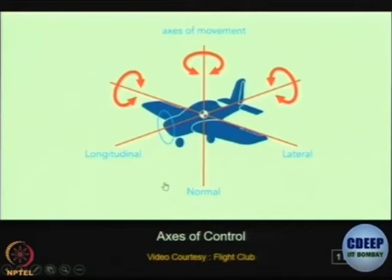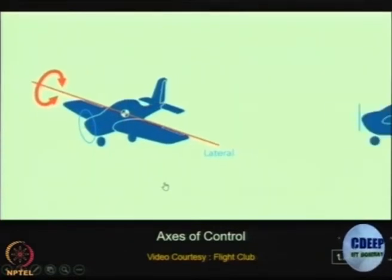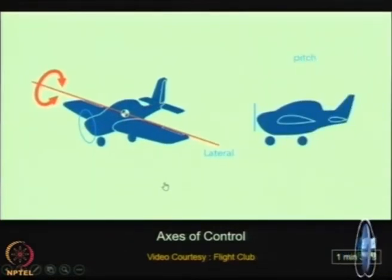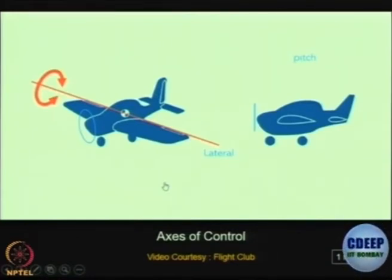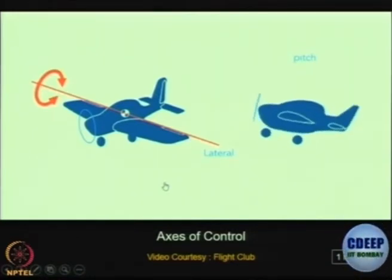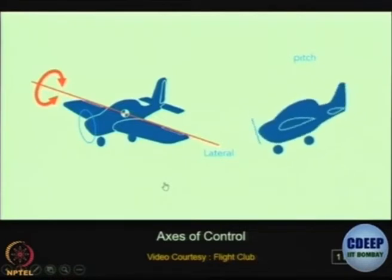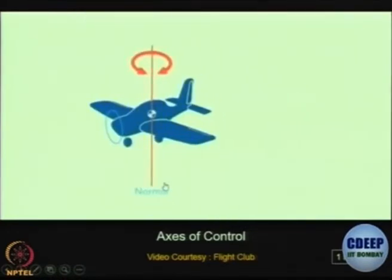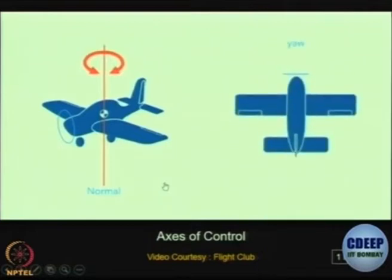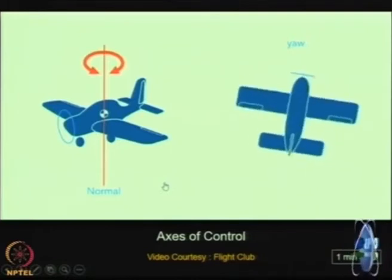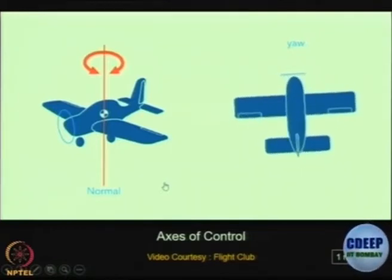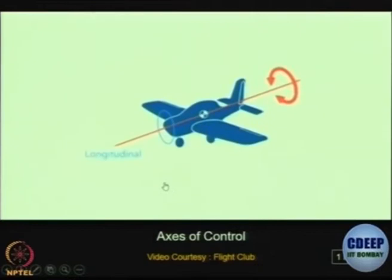Let's look at each individually. The rotation about the lateral axis is called pitch — this movement, nose up and nose down, is called pitching. The rotation about the normal axis is called yaw — this is the movement of the nose of the aircraft from side to side.